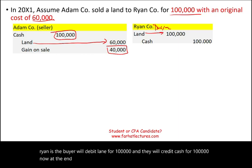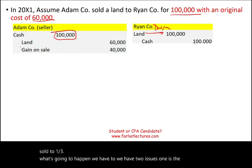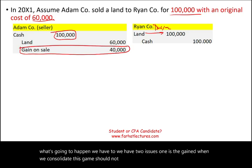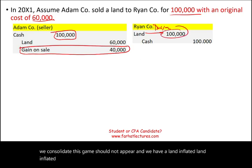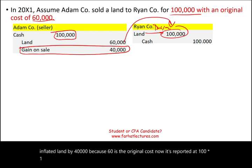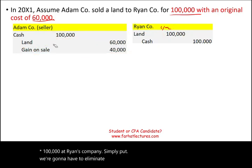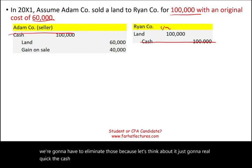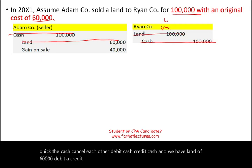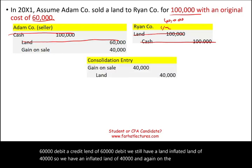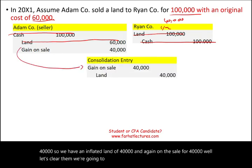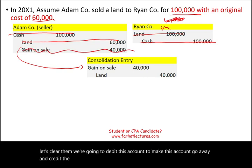At the end of the year, assuming this land is not sold to a third party, we have two issues when we consolidate. First, the gain should not appear — it sits on Adam's books but not on the consolidated statements, as it has nothing to do with the overall group. Second, the land is inflated by $40,000 on Ryan's books ($60,000 original cost is now reported at $100,000). We eliminate the gain and credit land to remove the inflated $40,000.